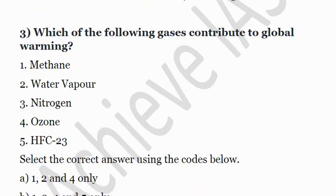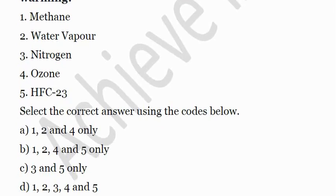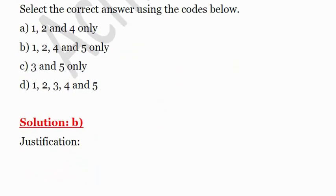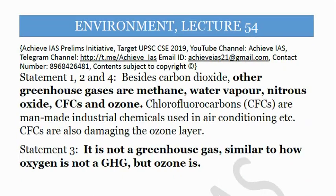Third question: Which of the following gases contribute to global warming? First, methane; second, water vapor; third, nitrogen; fourth, ozone; fifth, HFC-23. Only one option is incorrect — nitrogen is not a greenhouse gas. So the answer is B — 1, 2, 4, and 5 only, meaning methane, water vapor, ozone, and HFC-23 contribute to global warming. Nitrogen is not a greenhouse gas, but nitrous oxide is.